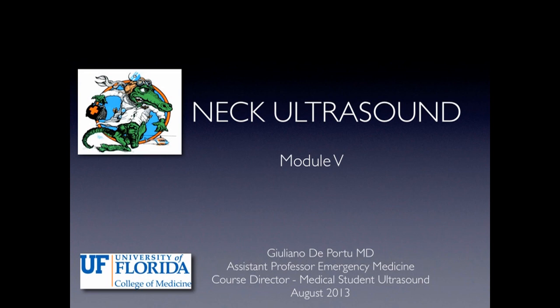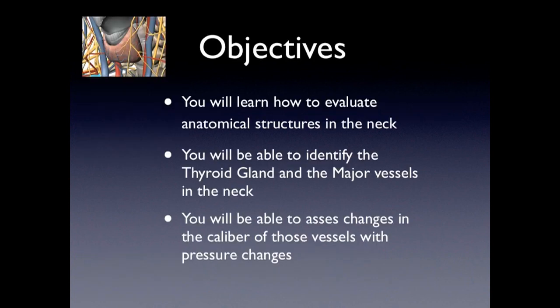Hello and welcome to the University of Florida ultrasound module for the medical school. This is the neck ultrasound, module number five, but it will be module number one for the first year class. You're going to learn how to evaluate the anatomical structures in the neck, mainly the thyroid gland and the vessels lying next to the gland, and you will be able to see changes in the caliber of those vessels with pressure changes.